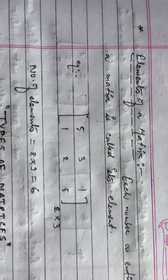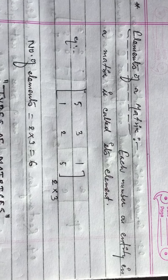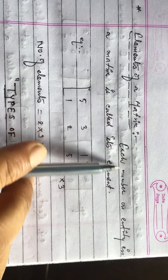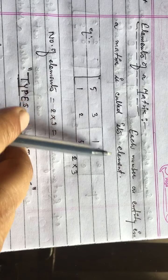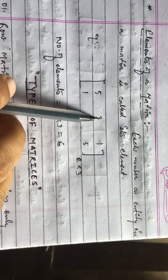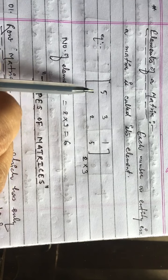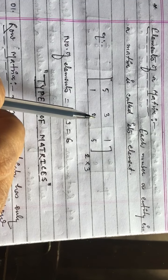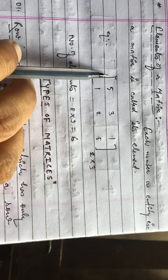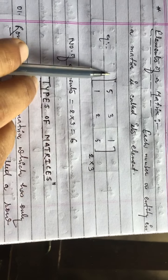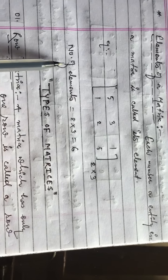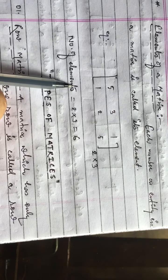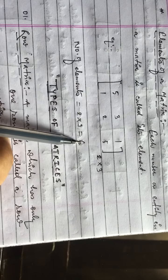Elements of a matrix: Each number or entity in a matrix is called its element. In a matrix having order two rows and three columns, the number of elements is calculated by multiplying the order: two into three equals six elements.